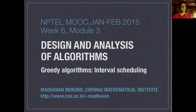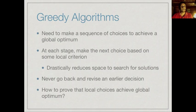Let's take another look at greedy algorithms. We're looking at algorithms where we need to achieve a global optimum by making a sequence of choices. In a greedy strategy, we make the next choice based on some local criteria — we just pick one of the available choices based on something which looks good at the moment. We never go back and revise an earlier decision, so we deterministically search through the space of solutions by picking a good choice at each step, which drastically reduces the search space.